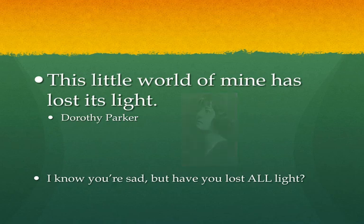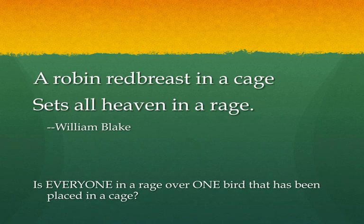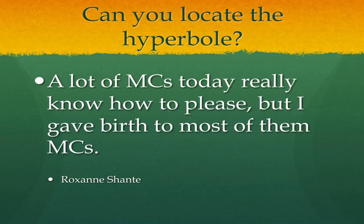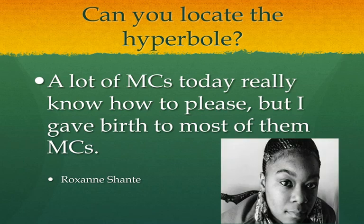'A robin red breast in a cage sets all heaven in a rage.' I can understand people being upset about animals in cages, but I have a hard time believing all of heaven is going crazy because one bird is in a cage. William Blake is trying to make his point: keep all the animals free. He's showing us what he proposes might happen if animals become locked up — that the entire world and heaven would be enraged. Now, see if you can stop the podcast and find the hyperbole in the next couple of examples.